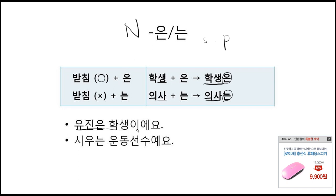For example: 유진은 학생이에요. 은 is attached to 유진 because there is an ending consonant. 유진 is the subject of the sentence — 유진 is a student. 시우는 운동선수예요. 시우 is also a Korean name. There is no ending consonant, so 는 is attached. 시우 is the subject of the sentence — 시우 is a sports player.